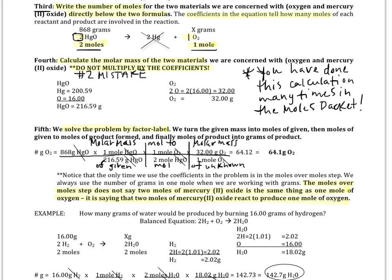Our fourth step, something you already know how to do. We're going to need to calculate the molar mass of just the 2 things we're dealing with in this problem. In other words, the molar mass of the mercury oxide and the molar mass of the oxygen. Do not waste your time calculating the mass of the mercury, because again, it's just extra information here.